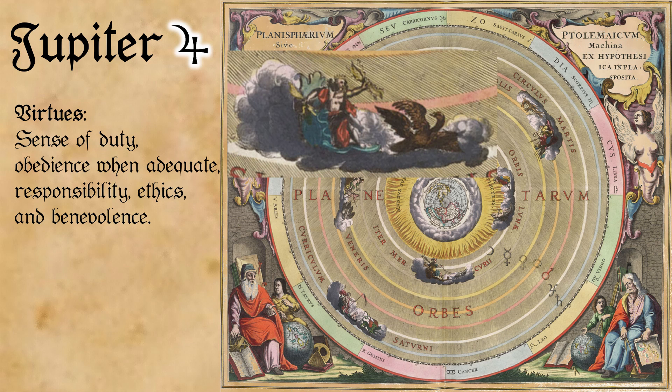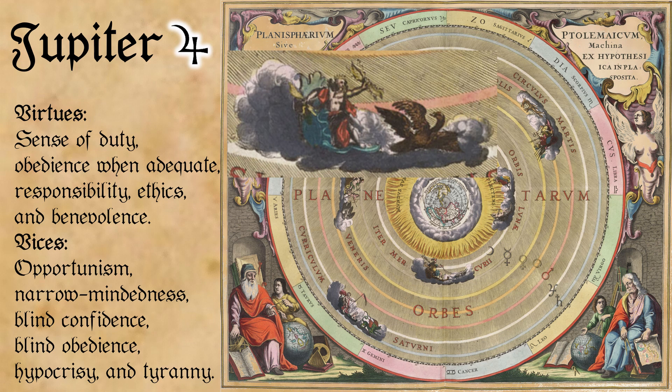Jupiter's vices are opportunism, narrow-mindedness, blind confidence, blind obedience, hypocrisy, and tyranny.